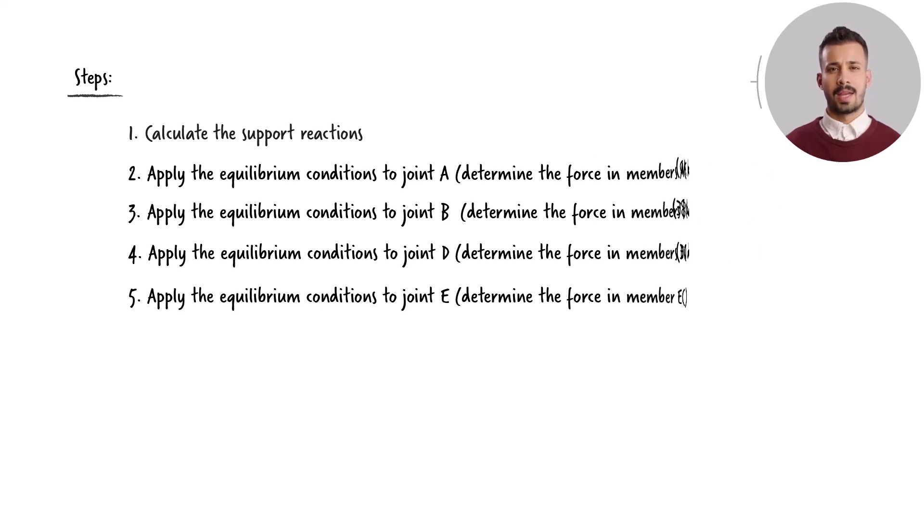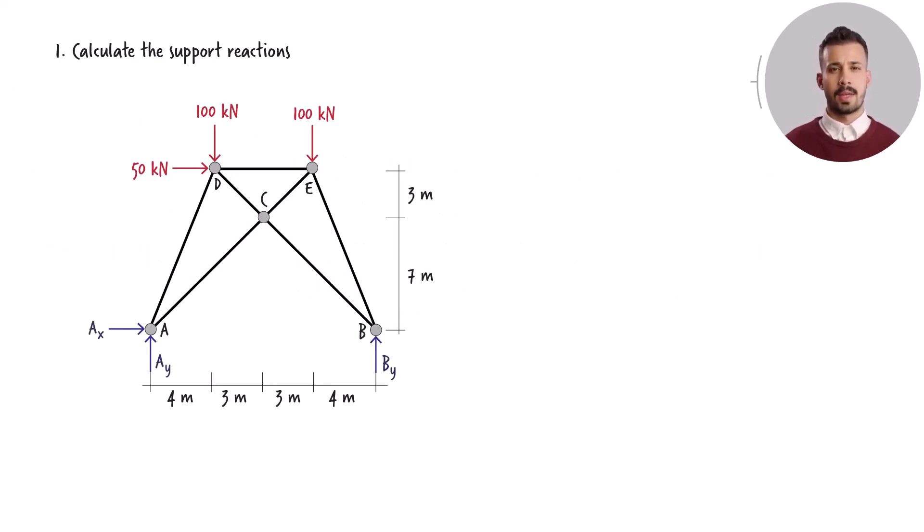To determine the support reactions, we begin by sketching the complete free-body diagram of the truss, which includes the forces exerted by the supports on the structure. For the purpose of writing the equilibrium equations, consider these directions as positive.